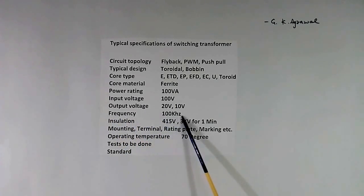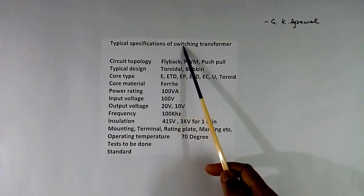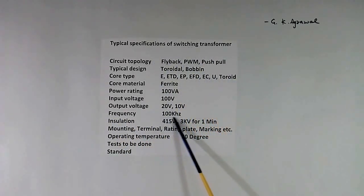Then we have to write at what frequency we will operate this transformer. I have written 100 kHz. Then insulation, I have written 2. One is continuous, that is 415V. You can write your voltage. And second is for start time, 3 KV for 1 minute.